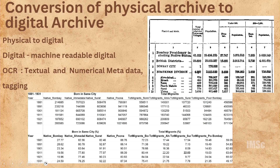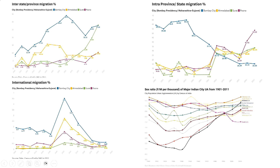That helped us in doing much better quantitative research on historical documents. We got amazing results on migration patterns in major cities in India — interstate migration in four cities in the Bombay Presidency, intra-province migration, international migration, and the sex ratio. These long-term trend analyses of historical data could only be done because of the digitization and extraction of the tables.